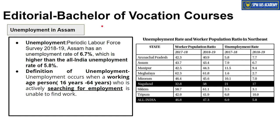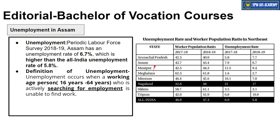Now you might feel 6.7% seems quite low, but if you understand the definition of unemployment carefully — a person between 16 to 64 years of age who is actively searching for employment but unable to find work — then in simple terms, among all people in the working age group, only 30-40% are actually looking for work or working. That is the labour force participation rate or worker-population ratio. Among those, 6.7% cannot find work. So very few people are even seeking jobs to begin with.